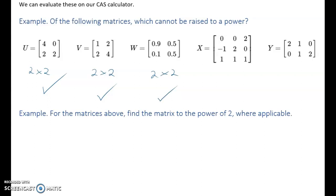X is you've got three rows, one, two, three, and three columns, one, two, and three. So it's a three by three. It's good. Y, you can see you've got two rows and three columns. So no, bad luck, Y, you cannot be raised to a power.